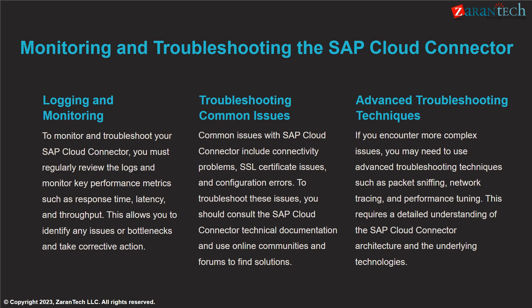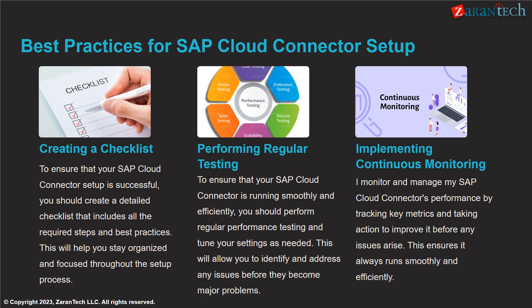Manage certificates by monitoring expiration dates and renewing as needed. Check cloud connector logs and troubleshoot any connection issues to ensure availability. Regularly review logs and metrics to monitor performance and identify issues. Troubleshoot common problems like connectivity issues and configuration errors by consulting SAP docs. Follow best practices like creating a setup checklist, testing regularly, and monitoring continuously to ensure smooth cloud connector operation.